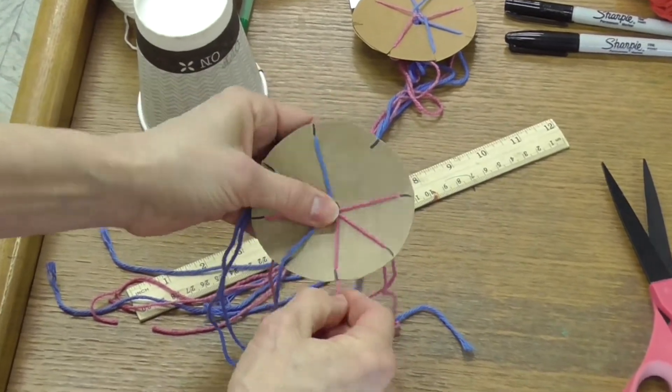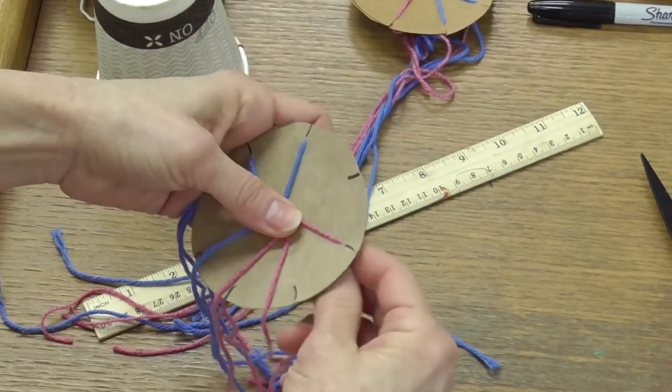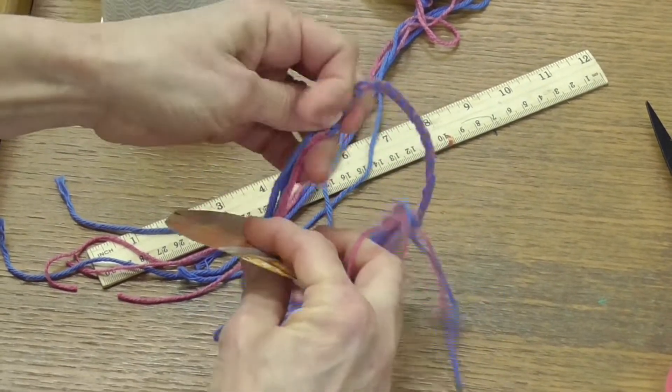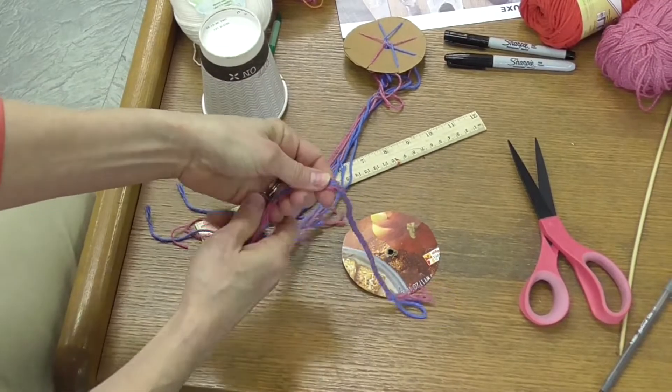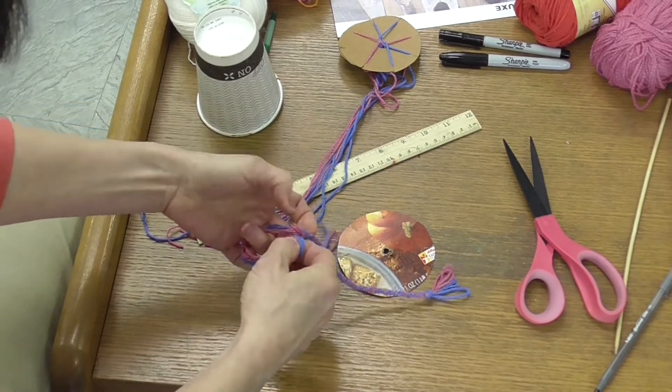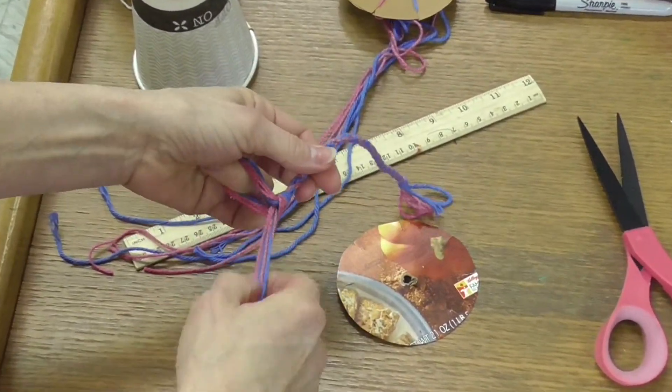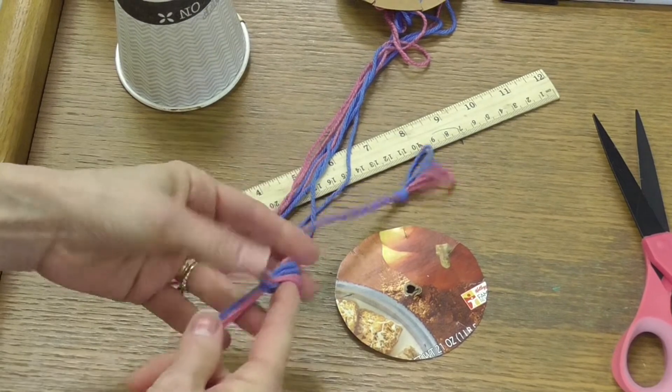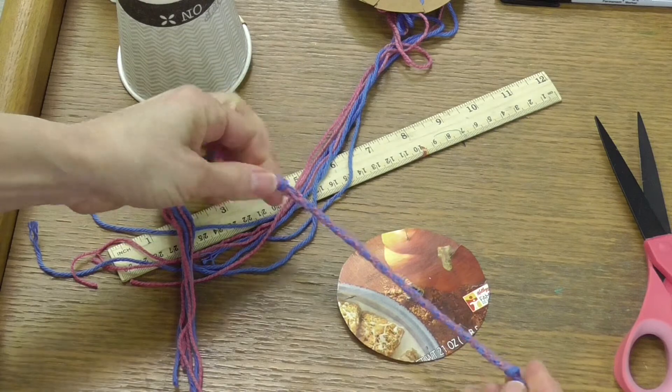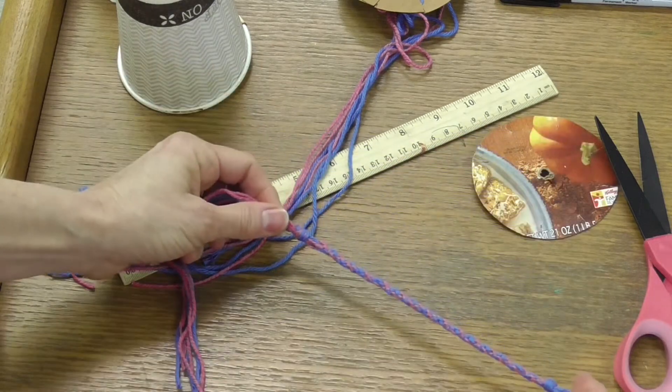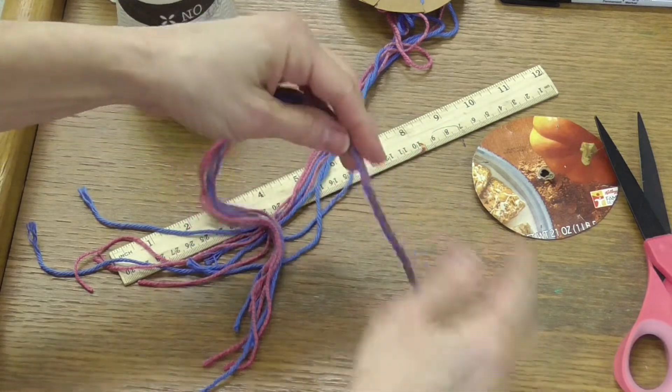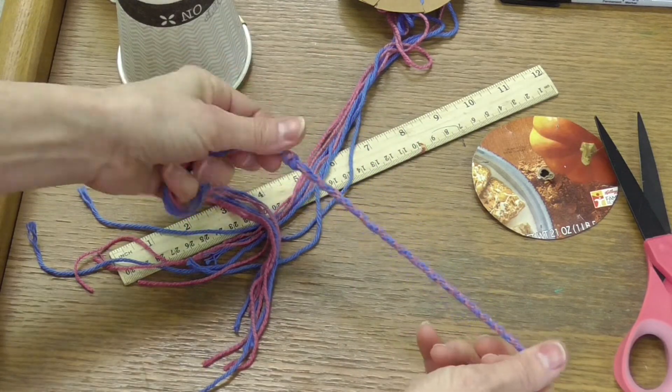And then I just tie another knot at the end so that it won't come unwound. So there's my bracelet, and you can see. Then I can tie it on my wrist, and I've got my woven friendship bracelet all ready to go.